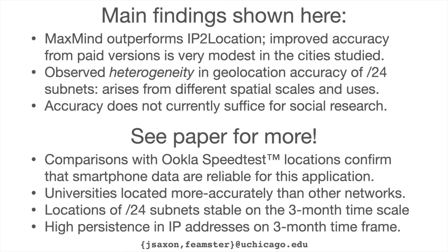That brings us to the end. We've shown that MaxMind outperforms IP2Location and that the improved accuracy from paid versions is quite modest in the cities we studied. We observed and decomposed heterogeneity in geolocation accuracy of slash-24 subnets — it arises from different spatial scales and different network uses. And we concluded that database accuracy does not currently suffice for social science research. This paper has a number of bonus findings that I'd invite you to check out. Thank you for your time — I look forward to your questions, and please feel free to connect at the emails given.